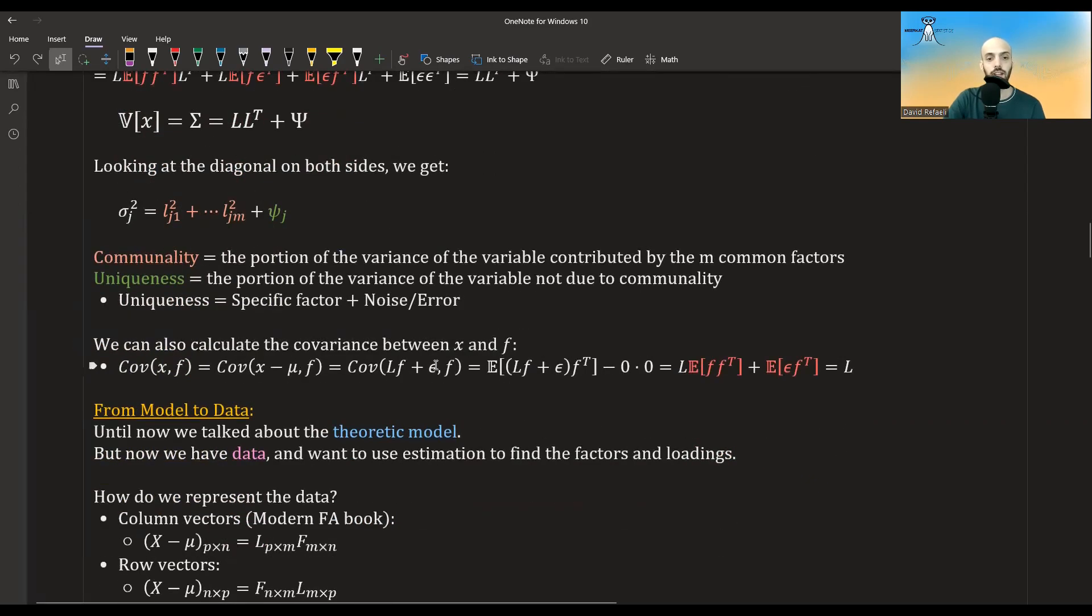Now we can also calculate the covariance between x and f, so between the vector of variables and the vector of factors, and the covariance of this is equal to the covariance of this, because adding or subtracting a constant doesn't change the covariance. This thing, we just put the model instead of it, this thing is equal to this, minus zero times zero, because the expected value of f is zero, the expected value of this is zero, and then distributing the expected value, we get this, this is equal to zero, we said that the epsilon and the f's are uncorrelated, they have no covariance between them, and this is equal to the identity matrix, so we got that the covariance between x and f is equal to l, and this is equal to the L matrix.